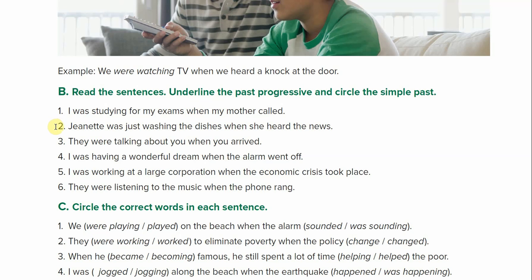Number two: Jeanette was just washing the dishes when she heard the news. Past progressive is was just washing, and heard is your simple past. Number three: they were talking about you when you arrived. Past progressive is were talking, and arrived is simple past.